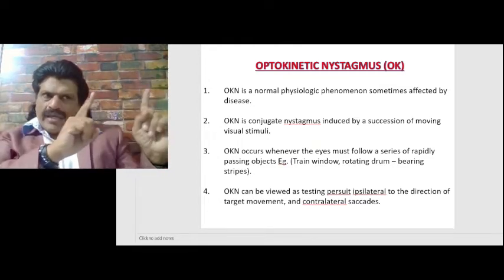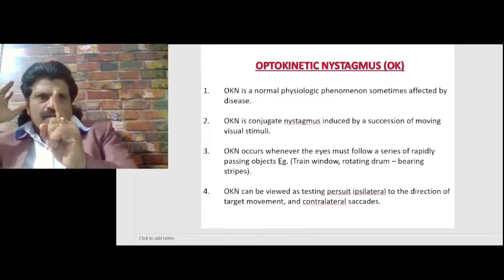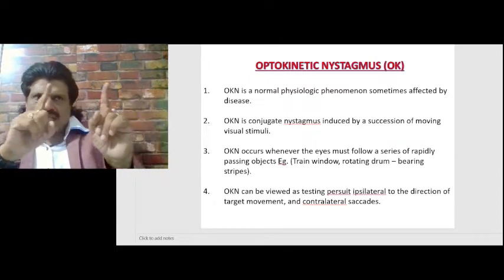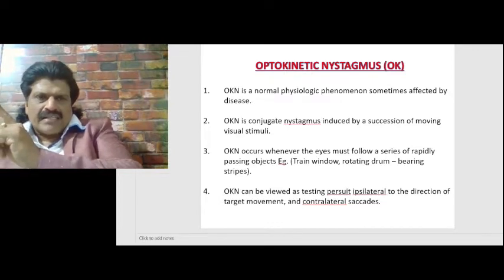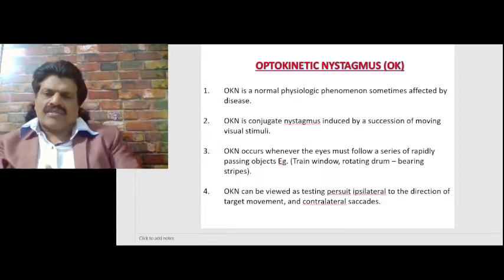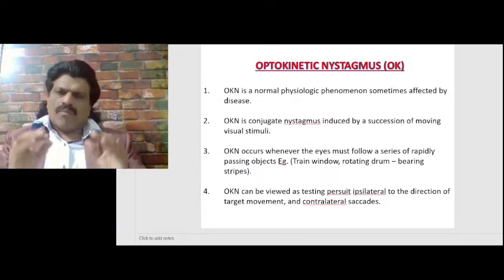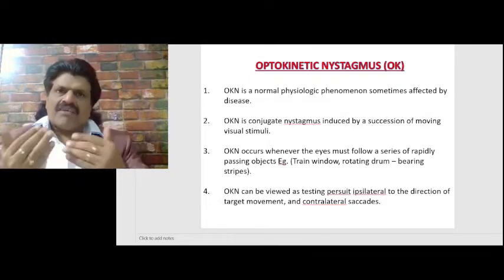When an object moves in front of the eyes, we keep following it. The ipsilateral parietal lobe initiates pursuit movements, connecting to the PPRF. When the object reaches the end of the visual field, the frontal eye fields — area number 8 — is stimulated, generating a rapid corrective saccade in the opposite direction.